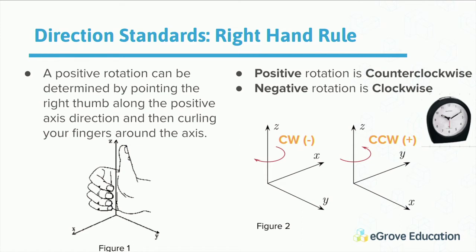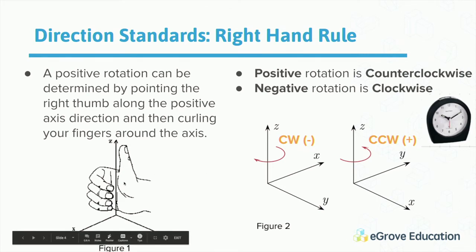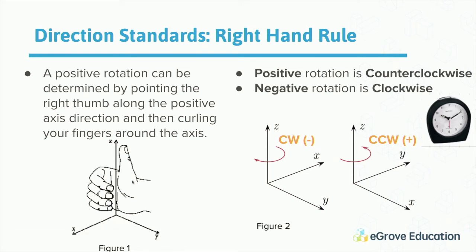The right-hand rule is a standard convention. When you take the X axis and use your right hand — putting your thumb along the direction and curling your fingers — that tells you what positive rotation is. For example, putting your thumb along the Z direction, positive rotation is counterclockwise around the Z axis. That's why counterclockwise is considered positive and clockwise is considered negative rotation.